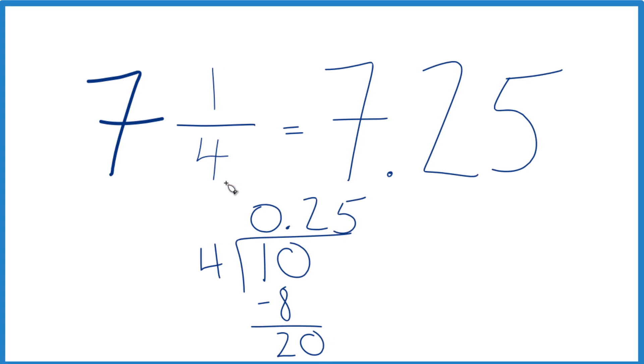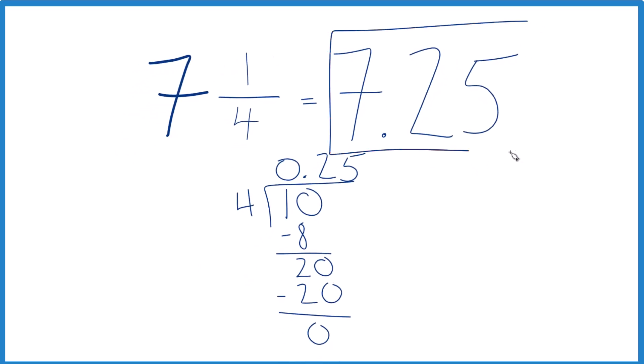So 1/4 is equal to the decimal 0.25. And 7 plus 0.25 gives you 7.25. So in answer to our question, the fraction 7 and 1/4 equals the decimal 7.25.